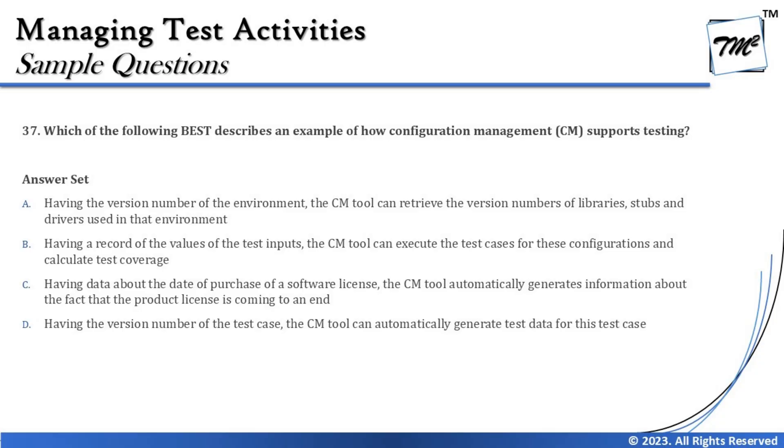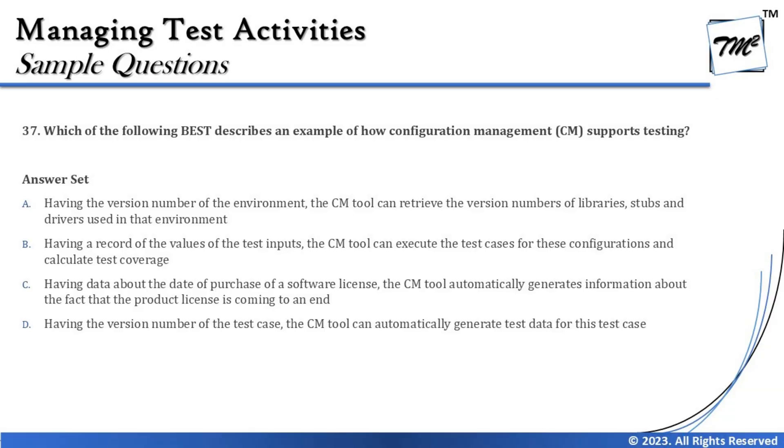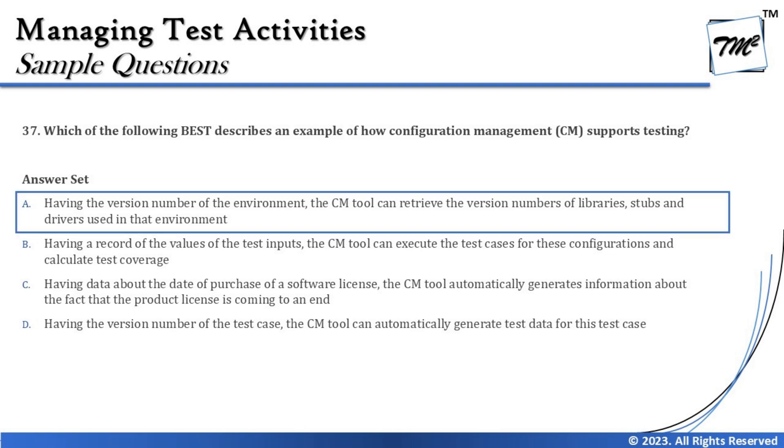Option D says: having the version number of the test case — the CM tool can automatically generate test data for the test cases. While having version numbers of test cases is valid CM functionality, generating test data is not. Test data preparation tools are separate from CM tools, as we covered in chapter 6. So the right answer for this question is A: having the version number of the environment, the CM tool can retrieve the version numbers of libraries, stubs, and drivers used in that environment. Good knowledge of the subject leads you to the right answer.